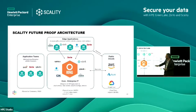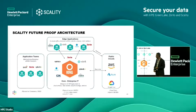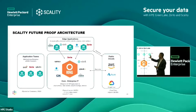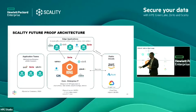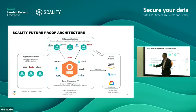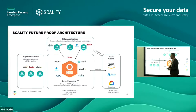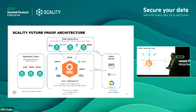When you combine Ring and Artesca, you get a future-proof architecture. You can have many different applications — CCTV, email, logging — running in your core data center on Ring, starting at three servers. Edge applications can sync back to the Scality Ring, so the two products work in harmony. Alternatively, Artesca can run as a standalone edge location with one or three servers. If an application team just needs S3 storage, you can spin up Artesca on a virtual machine and they can use it straight away. And there is replication to the public cloud as well.